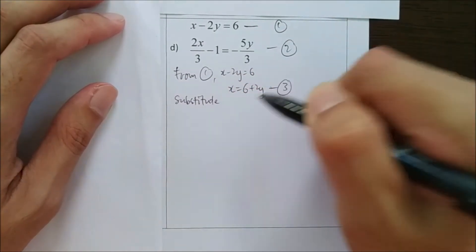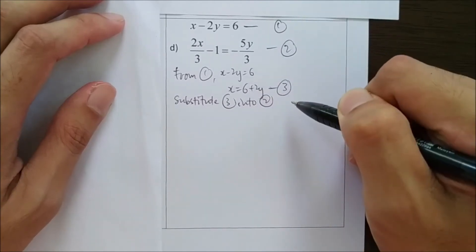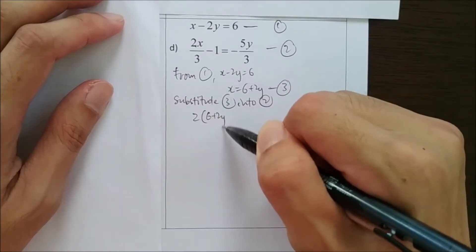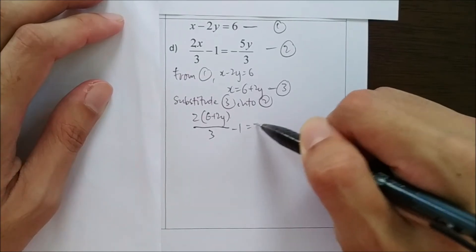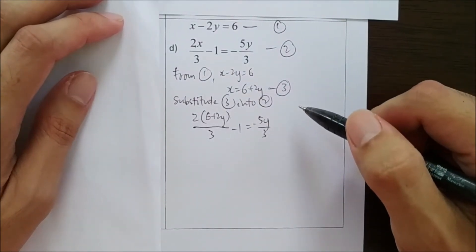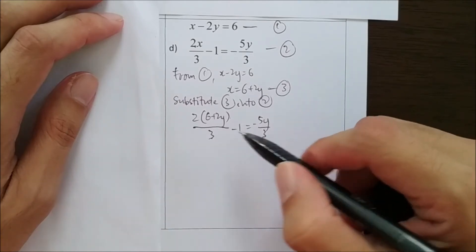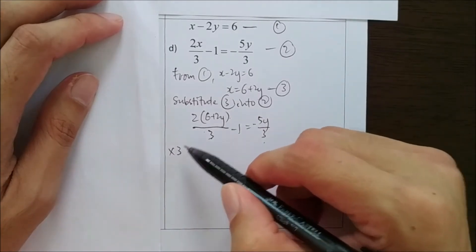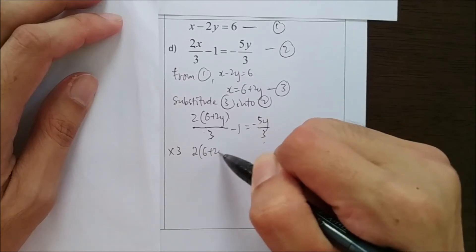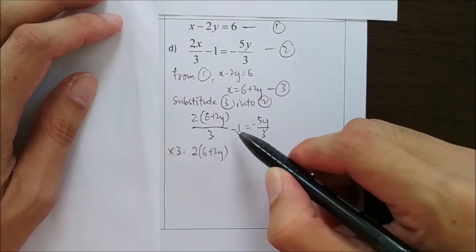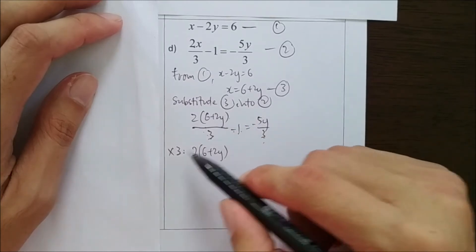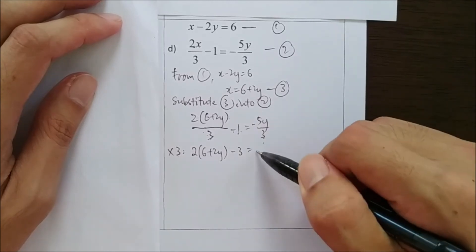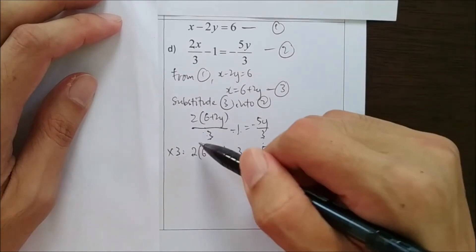Substituting equation 3 into equation 2: 2(6 plus 2y) over 3 minus 1 equals negative 5y over 3. Remember to always use brackets. To get rid of the fractions, multiply all terms by 3. The 3s cancel, giving 2(6 plus 2y) minus 3 equals negative 5y. I simplify to get 12 plus 4y minus 3 equals negative 5y.